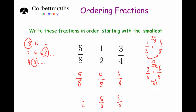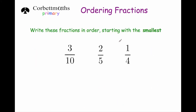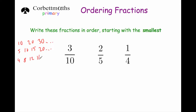Let's have a look at question 1. We've been asked to arrange in order from smallest to largest: 3 tenths, 2 fifths and 1 quarter. We look at the numbers on the bottom — 10, 5 and 4 — and we want to find the first common multiple of 10, 5 and 4. The multiples of 10 are 10, 20, 30 and so on. The multiples of 5 are 5, 10, 15, 20 and so on. And the multiples of 4 are 4, 8, 12, 16, 20. So 20 is the lowest common multiple of 10, 5 and 4.